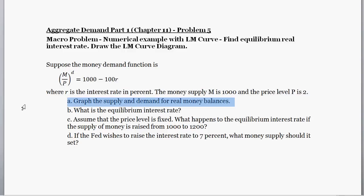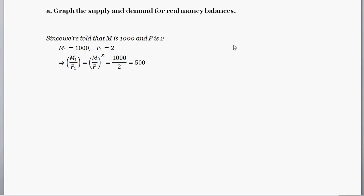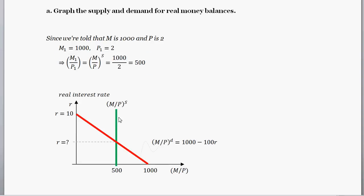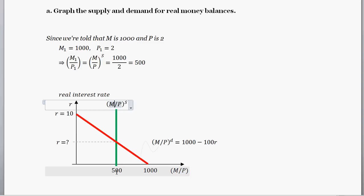Part A: graph the supply and demand for real money balances. We're told that the money supply M₁ is 1,000 and the price level P₁ is 2. So the real money supply is M over P, which is 1,000 divided by 2, equal to 500. Next, we're going to get both curves — money demand and money supply — onto one graph. Money supply is a vertical line at 500, because no matter what the real interest rate is, the real money supply is still 500.